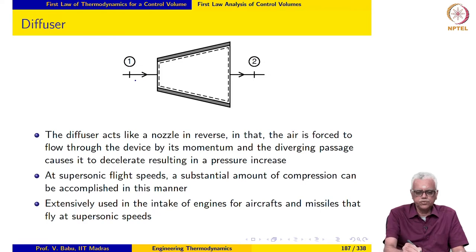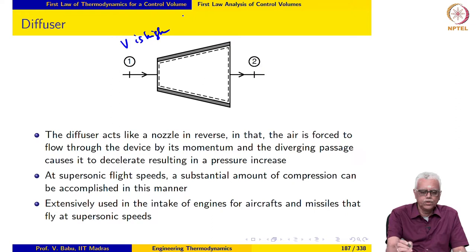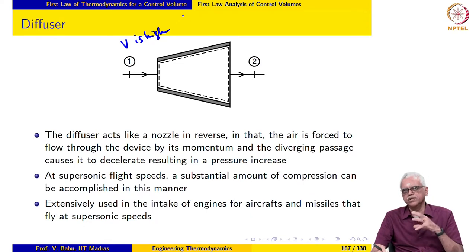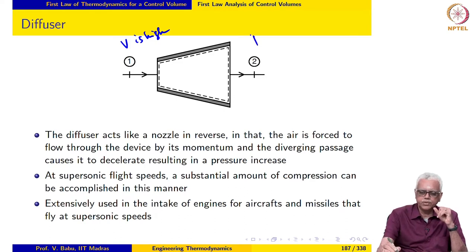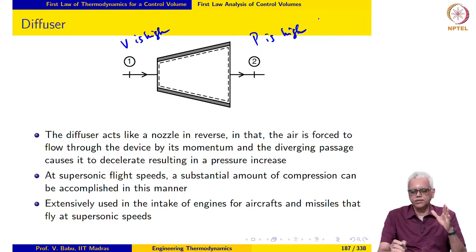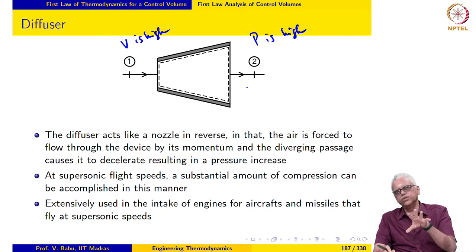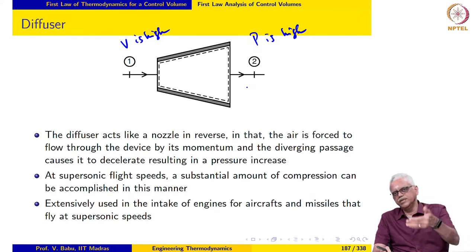In the case of the diffuser, the velocity of the fluid as it enters is usually very high. What we would like to do is convert this momentum into static pressure at the exit of the diffuser. Fluid will not normally flow from low pressure to high pressure, but because the velocity at the inlet is high, we force it through the diffuser where the pressure at the exit is higher — that is possible because the momentum is being converted to pressure.